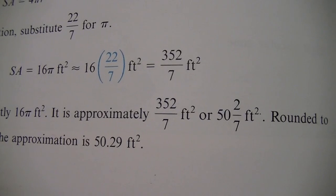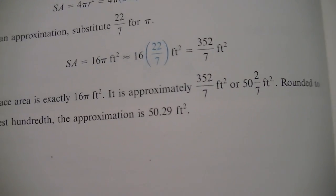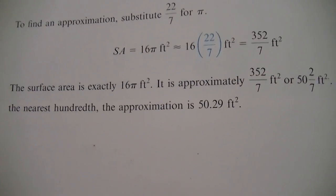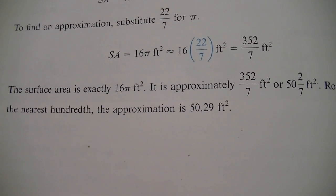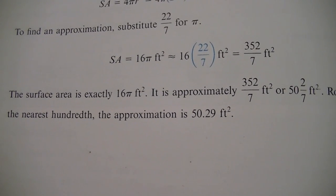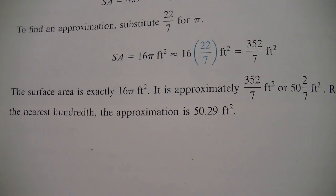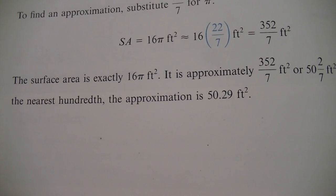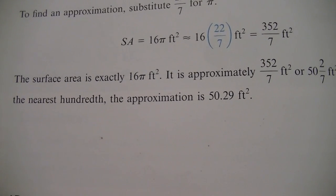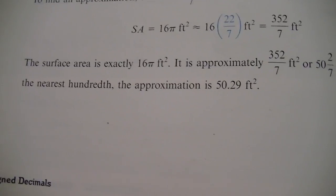But what if we want to deal with decimals? We're going to take our top number, which is the two, divided sign, seven, equals sign in your calculator. And what you're going to come up with is 0.29. So that's how they got that answer of 50.29 feet squared. All right. So let's go on one more example.